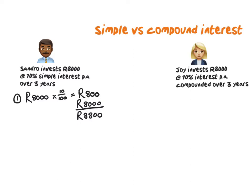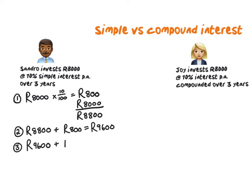How much interest does he get in the second year? Also just 800 Rand. So after the second year he will have 8,800 plus another 800 Rand, which gives us 9,600 Rand. And after the third year we'll have another 800 Rand. We could also just say 800 times 3 and add it on, giving us 10,400 Rand.